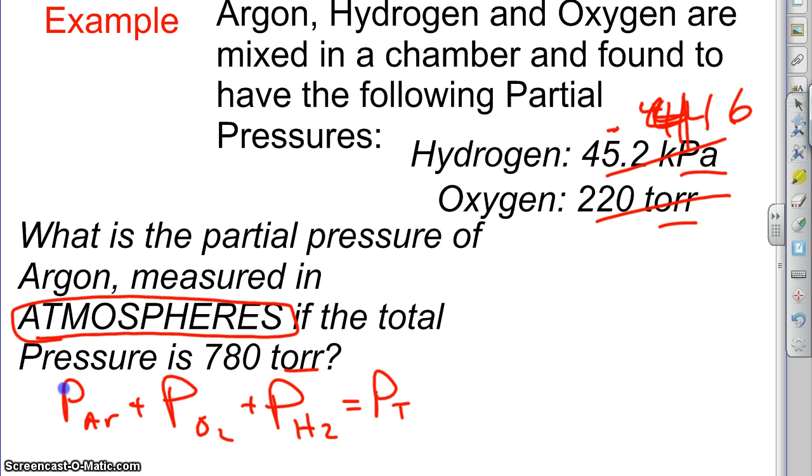And in atmospheres, this 220 torr number becomes 0.289. And in atmospheres, this total 780 becomes 1.03, or 1.0 I suppose, given that we can only justify two sig figs.